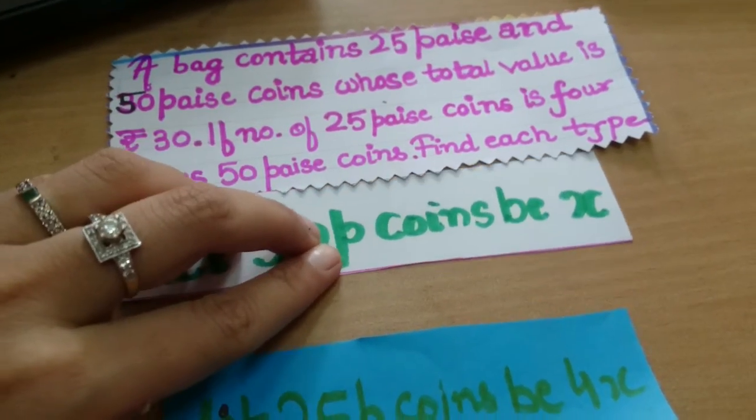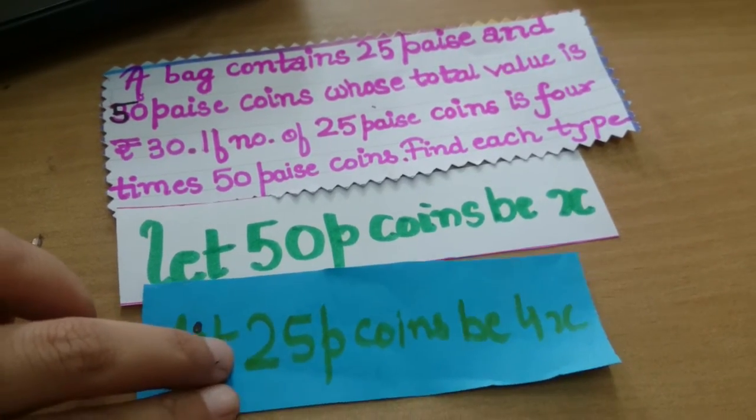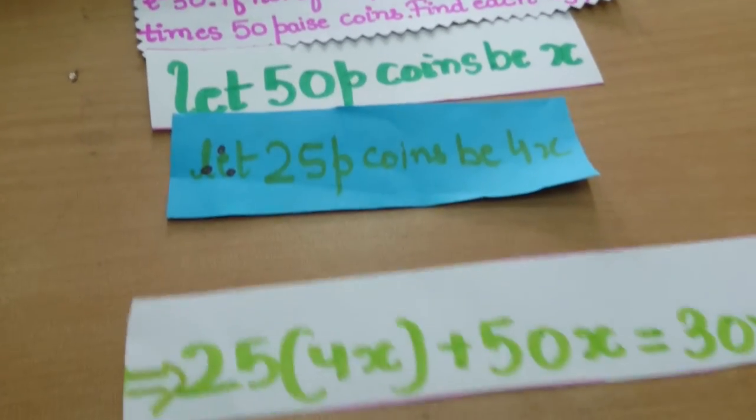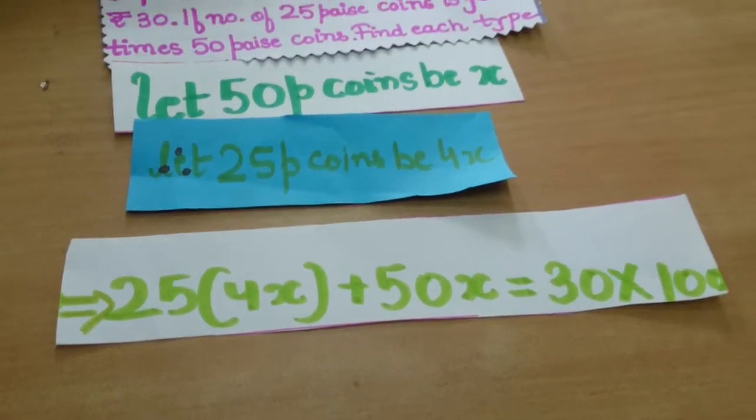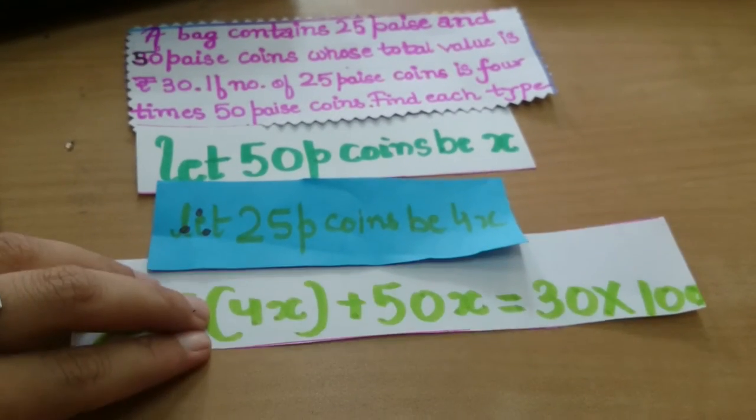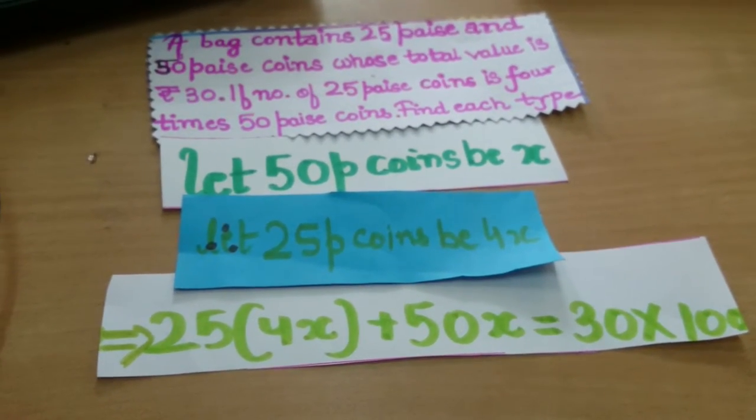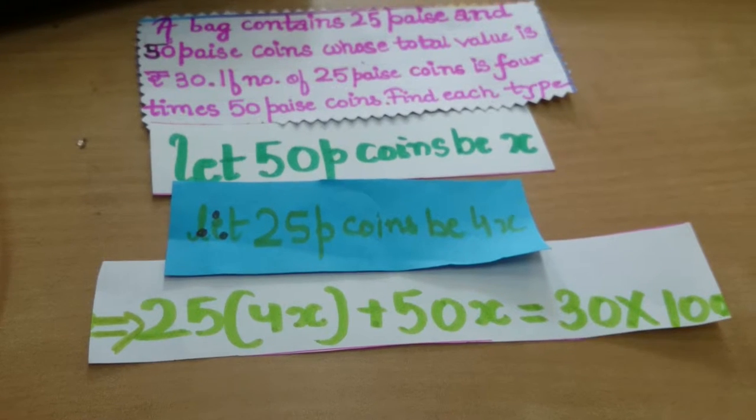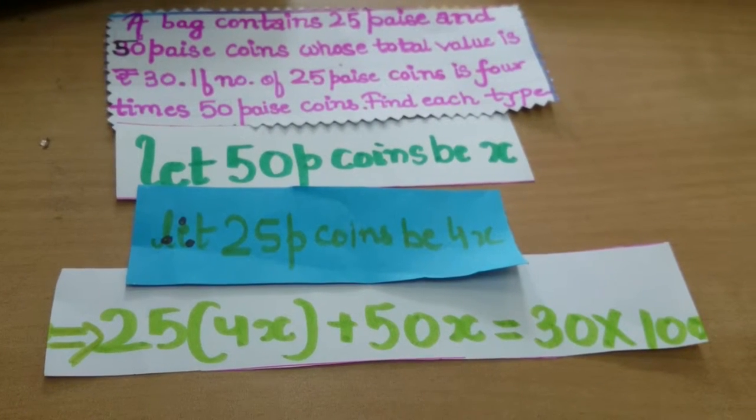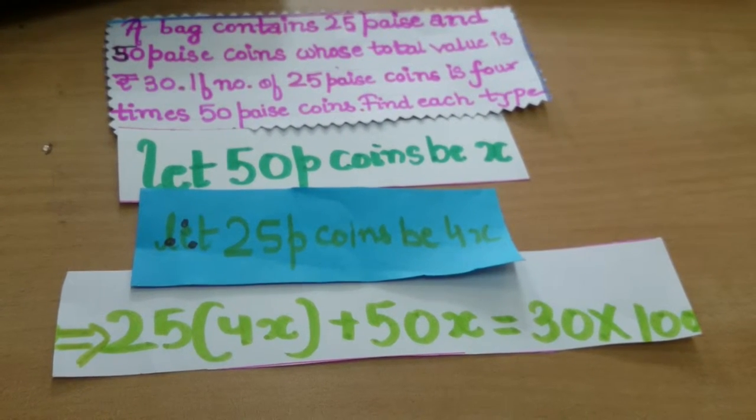We will make the equation like 25 into 4X plus 50X is equal to 30 into 100, because the amount added with 25 paisa coins is 4X and 50 paisa coins is X.